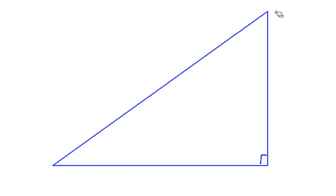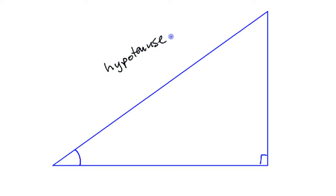There's one acute angle, and there's the other acute angle. Let's say we're looking at it from this angle down here. If we're looking at it from that angle, the three sides have different names. One of the names doesn't matter which angle you're looking from, and that is this side here — the hypotenuse. That side, the longest side across from the right angle, that's the hypotenuse.